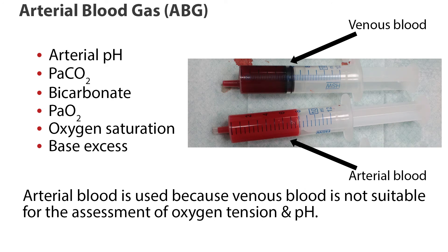The arterial blood gas, or ABG, provides valuable information about the acid-base balance of the blood and the oxygenation status of the blood. It measures the arterial pH, PaCO2, bicarbonate, PaO2, oxygen saturation, and base excess.